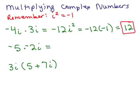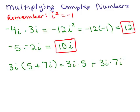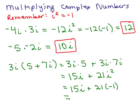For the next multiplication example, negative 5 times negative 2 is 10i — that one's straightforward. For the third example I need the distributive property: 3i times (5 + 7i) gives 3i times 5 plus 3i times 7i. That's 15i plus 21i squared. Substituting i squared equals negative 1 gives 15i plus 21 times negative 1, which is 15i minus 21. Writing in standard form with the real part first: negative 21 plus 15i.